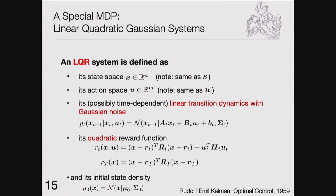Gaussian noise only becomes necessary when moving from the MDP to the POMDP — when you're no longer observing the complete state and need a filter. In that case, the Gaussianness of the Kalman filter state estimator must be compatible with the Gaussianness of the LQR model. For most cases, Gaussian noise is most practical. We assume a quadratic reward function of state and action, a quadratic final state reward, and a Gaussian start state distribution.